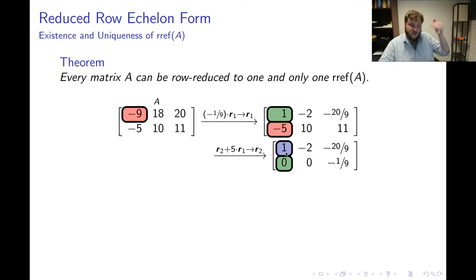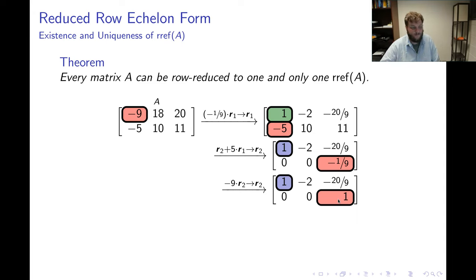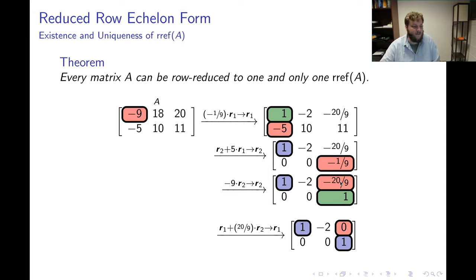In the second row, the first non-zero entry is negative 1/9, which is not 1 — it needs to be our pivot. So I scale row 2 by negative 9 to produce a 1 in the (2,3) position. I'm still not in reduced row echelon form because directly above that pivot is a non-zero number. I take row 1 and add 20/9 times row 2 to it, making the (1,3) position 0, and I am now in reduced row echelon form.